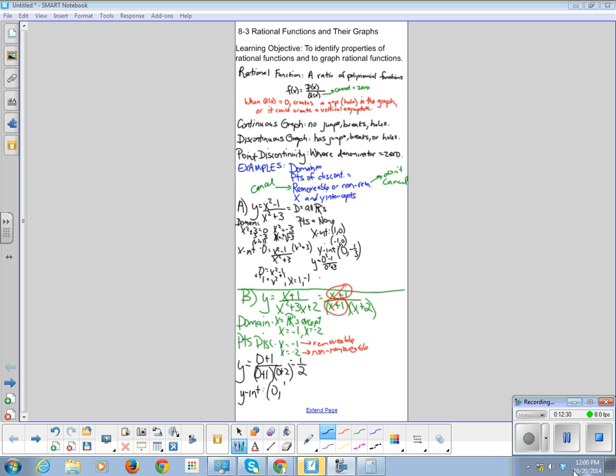And the x intercept is at x plus 1 times x plus 2 equals 0. So 0 equals x plus 1, so x equals negative 1. Is x equal to negative 1 an intercept? And that is no, because our domain cannot equal negative 1. So there are no x intercepts, because there's no way we can solve this to get a number other than our points of discontinuity.